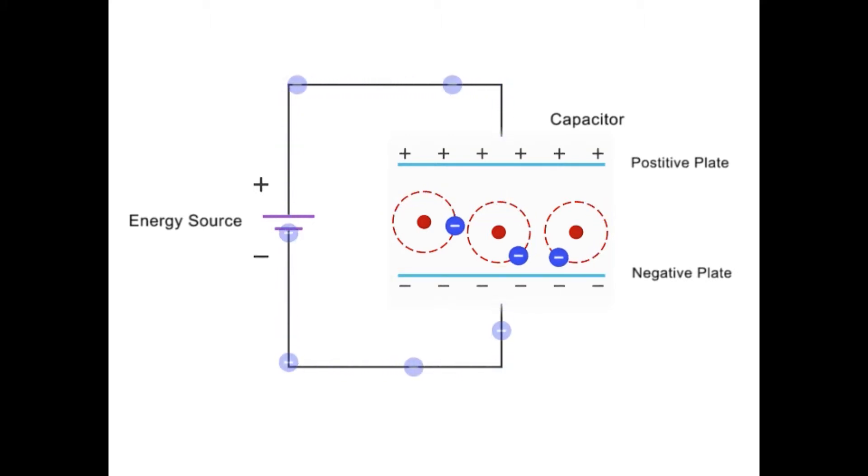As charge accumulates on the positive plate, the electrons of the dielectric material gravitate toward the positive plate, distorting their orbits.